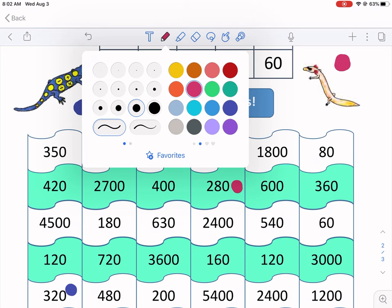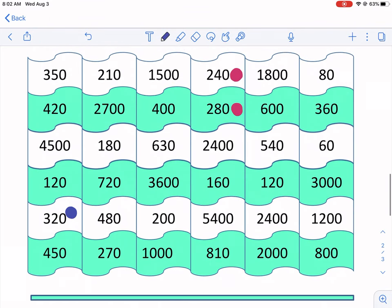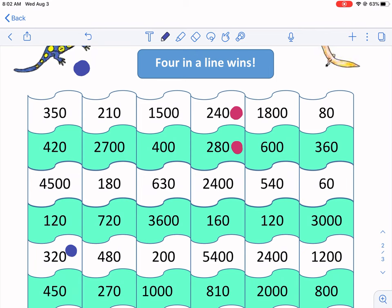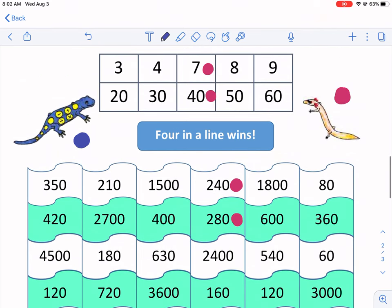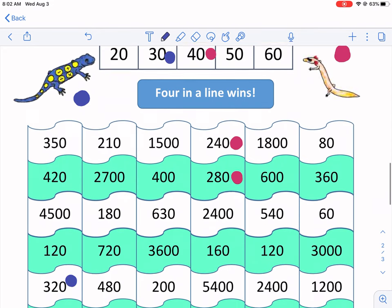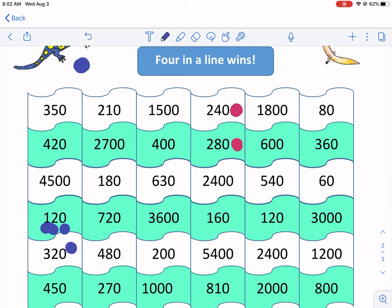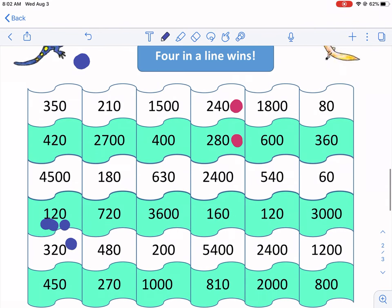Now it's blue's turn. Blue goes. So blue, he's got the same problem. He needs to make these numbers. So I know I can do 40 times, I need to be careful here. Four times 30. So I know four times three is 12. And then I got that extra zero from the 30. So 120, that is my answer. I'm going to put a marker down.